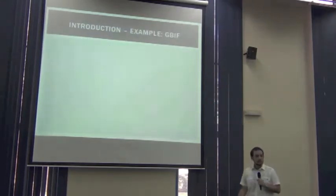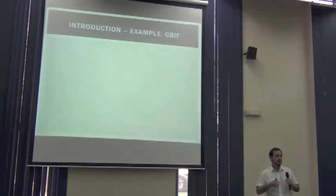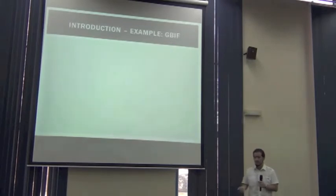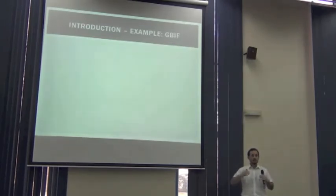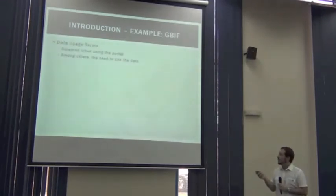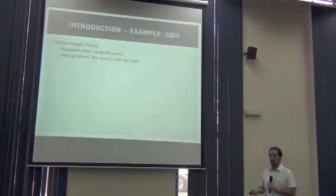Let's use GBIF as an example of error flagging. GBIF, by their internal structure and their way of being, can't run processes to modify the original information. So what they do in order to provide a higher level of quality is to flag the errors that appear in the data. So we as users, when we go to GBIF and download the data using the data portal, we have to accept some data usage terms.